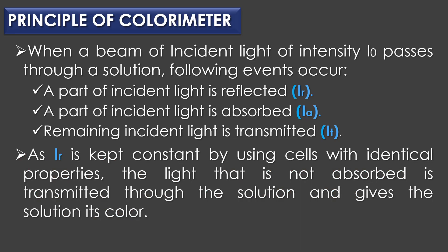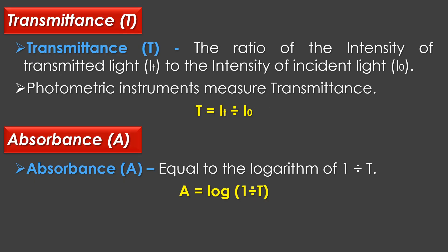Principle of colorimeter: When a beam of incident light of intensity passes through a solution, the following events occur. First, a part of incident light is reflected, denoted as Ir, and is kept constant by using cells with identical properties. The light that is not absorbed is transmitted through the solution and gives the solution its color. Note that the color of the incident light should be complementary to that of the color of the solution.